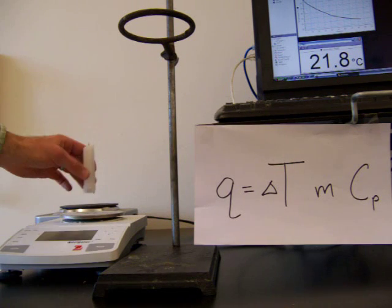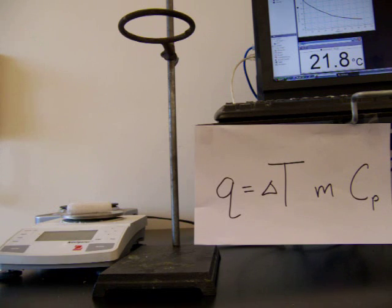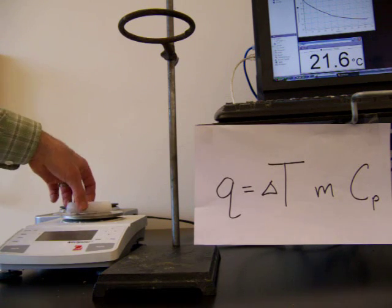First thing I need to do is find the mass of my candle. So I'll set the candle on the balance, and we have an initial mass of 21.37 grams.